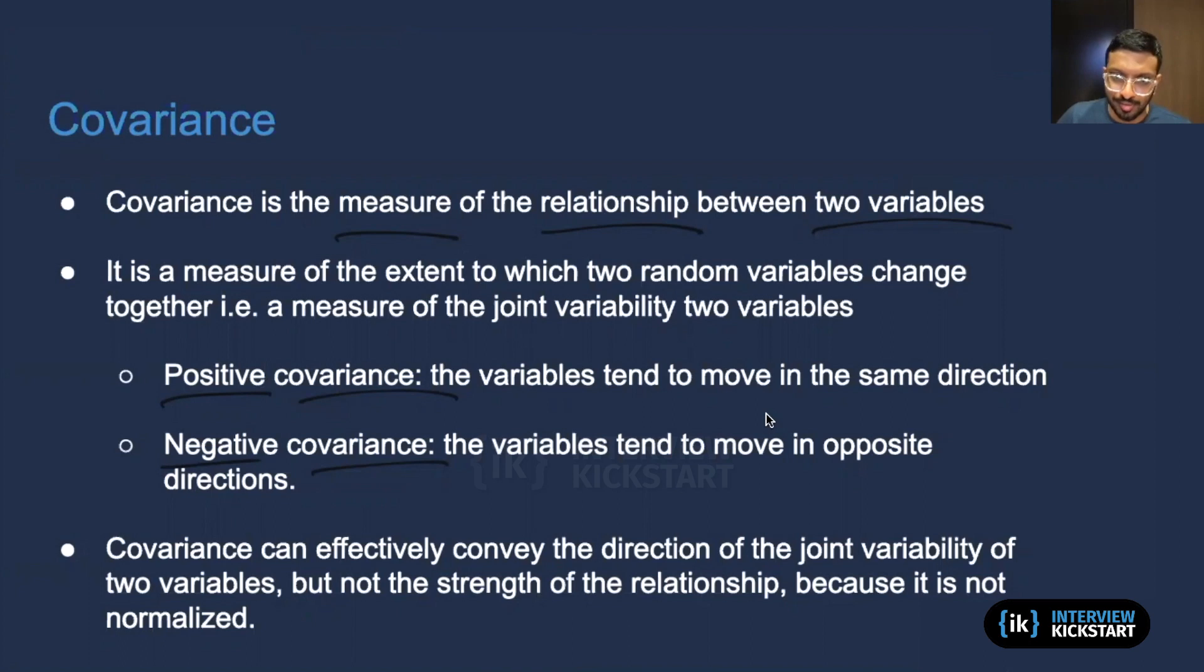Now, covariance is actually very good at conveying the direction of this joint variability, but it is not very good at conveying the strength of the relationship. That is to say, you could have a positive or a negative value, or you could have a zero value. And that basically gives you all the information that we saw on the previous slide.